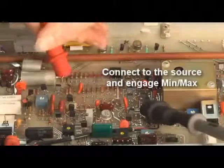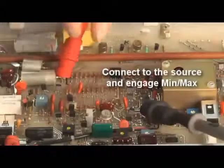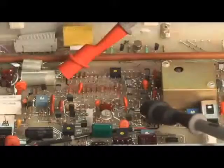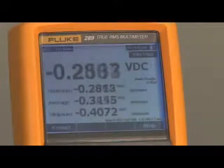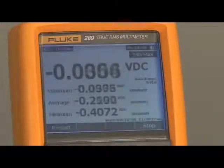Using the DMM is easy. Simply connect the 287 or 289 to the source and engage the min-max function. The meter will capture and display any changes to the signal which may occur during the recording process.